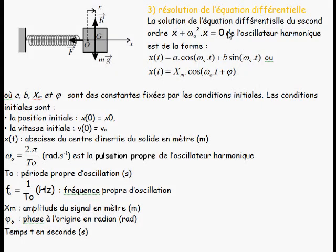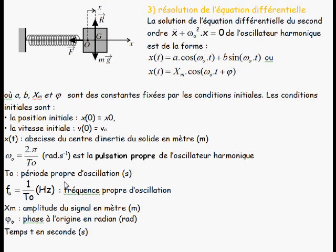En conclusion, la solution de l'équation différentielle du second ordre ẍ + ω₀²x = 0 est de la forme suivante ou celle-ci. Nous avons a, b, xₘ et φ qui sont des constantes fixées par les conditions initiales : la position du centre d'inertie du solide à t = 0 ainsi que sa vitesse initiale V₀. x est l'abscisse du centre d'inertie en mètre, ω₀ la pulsation propre en rad/s, T₀ la période propre en secondes, f₀ la fréquence propre en hertz, xₘ l'amplitude en mètre, φ la phase à l'origine en radian, et t le temps en secondes.